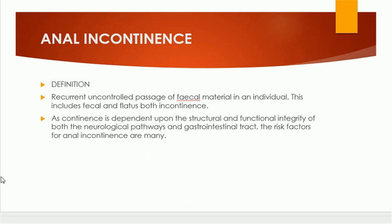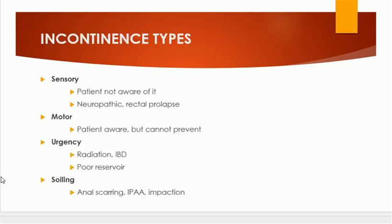There are different types of incontinence. It may be a sensory type, motor type, urgency-associated incontinence, or soiling type of incontinence. With sensory incontinence, the patient is not aware that he is incontinent — the reason is neuropathic causes or rectal prolapse.